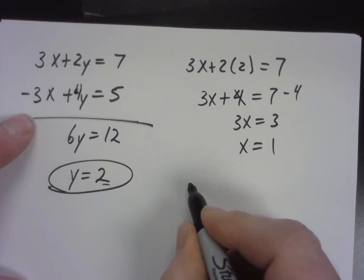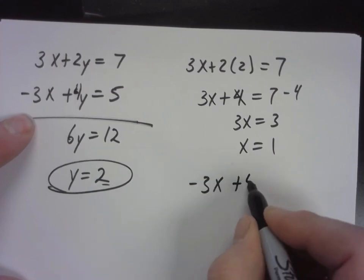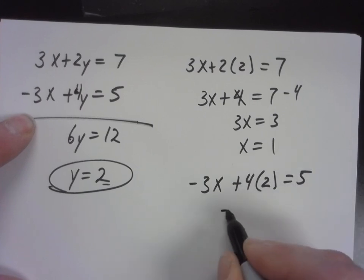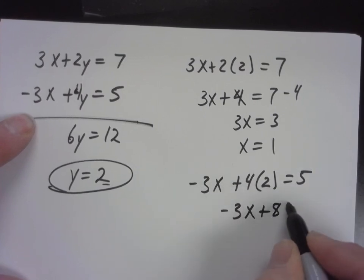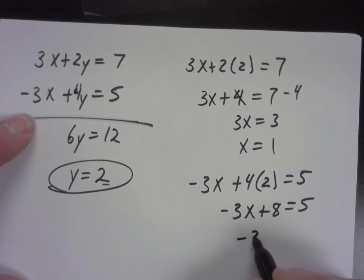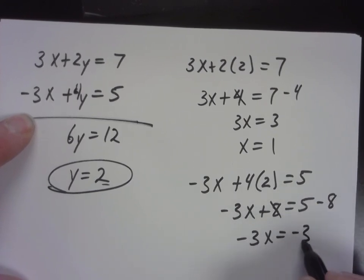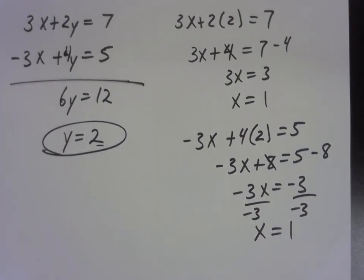And I want to point out, if we put y equals 2 in the bottom equation, negative 3x plus 4 times 2 equals 5. Negative 3x plus 8 equals 5. Negative 3x equals negative 3. And then divide both sides by negative 3. x still equals positive 1, doesn't it? So it doesn't matter which equation you plug it back into, you should get the same result for the other variable.